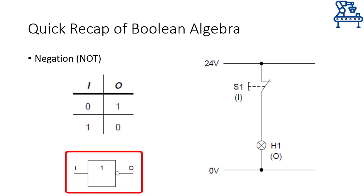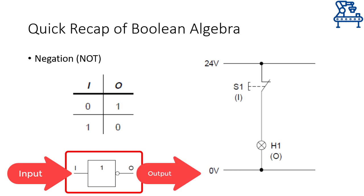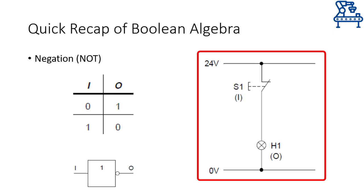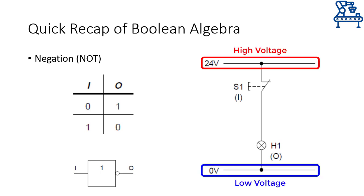The ISO symbol for the NOT gate is this one, with this side being the input and the other as output. Moreover, this schematic shows how a NOT gate may be implemented electrically. The schematic presents a high voltage and a low voltage rail between which some components are attached. The current will flow from the high voltage rail to the ground or zero voltage rail. This particular representation will be helpful for producing standard industrial electrical drawings and even the ladder logic program for a PLC.